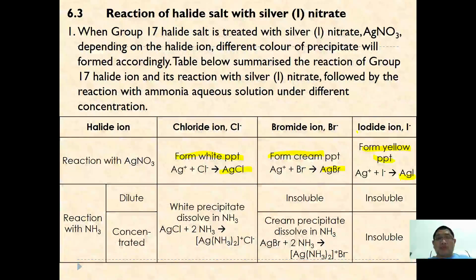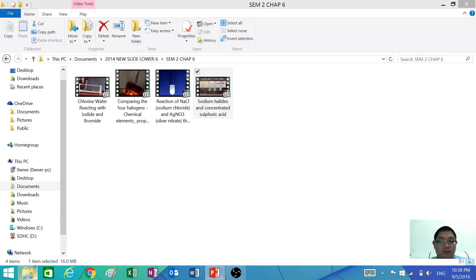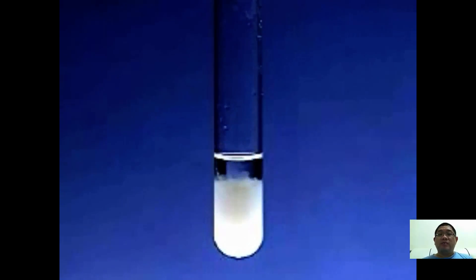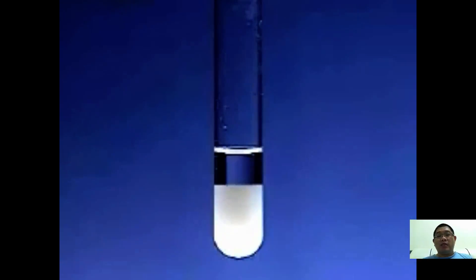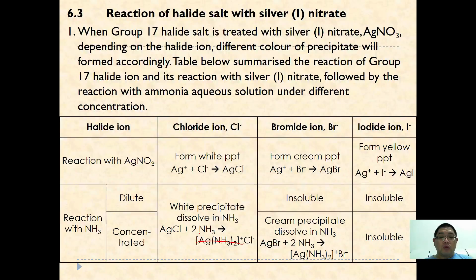Let us observe a video of silver chloride dissolving in ammonia solution. When silver nitrate is added to sodium chloride, a white precipitate forms. A few drops of ammonia are then added, and the white precipitate starts to dissolve. When excess ammonia solution is added, the precipitate eventually turns colorless. This is due to the formation of the complex [Ag(NH₃)₂]⁺Cl⁻.